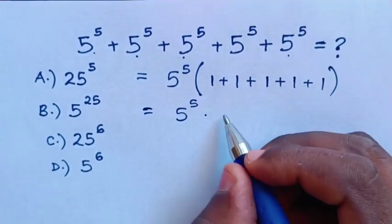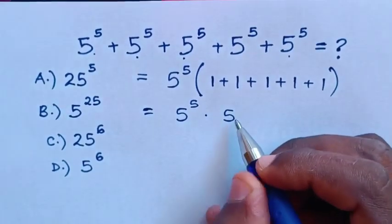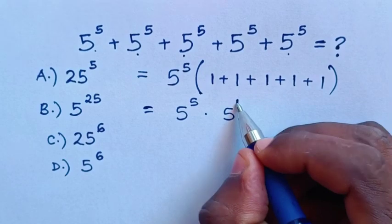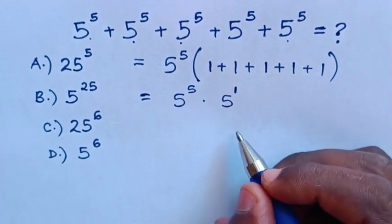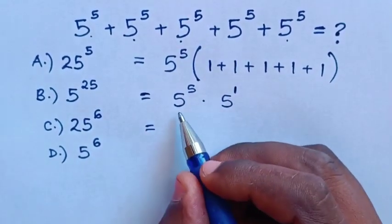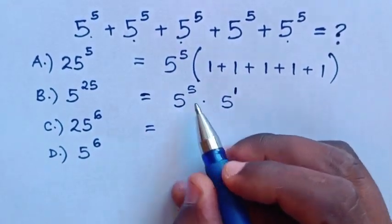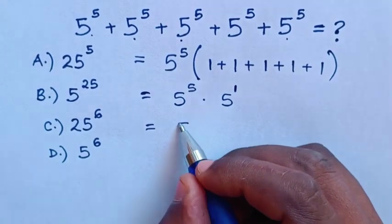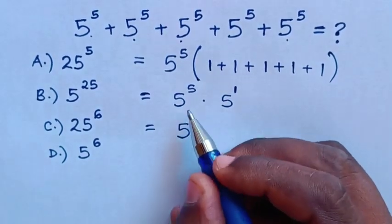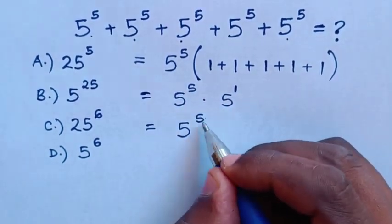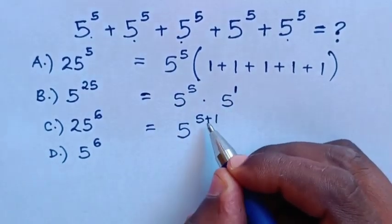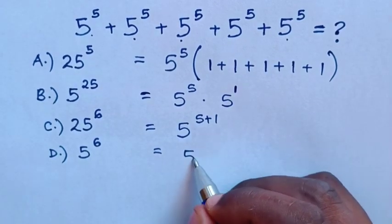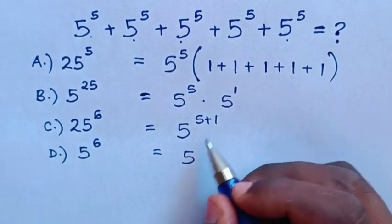The sum of 1 plus 1 plus 1 plus 1 plus 1 is 5, which is the same as 5 power 1. Because we have the same base but different powers, it will be 5 power 5 plus 1, which is equal to 5 power 6.